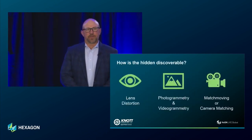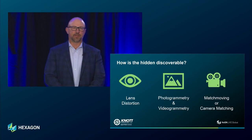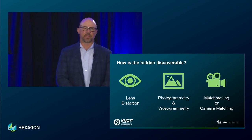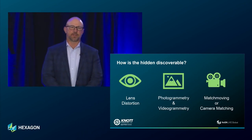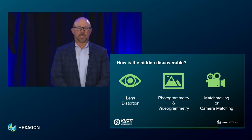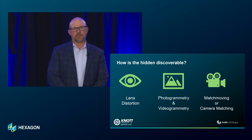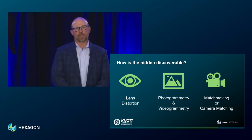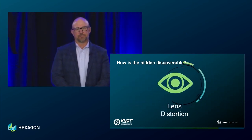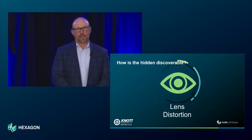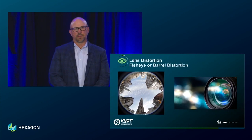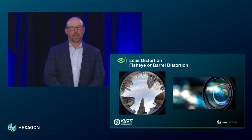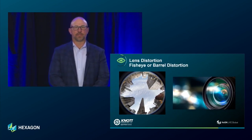As we talk through this hidden information that is now discoverable through this process, there are three things I'm going to cover: lens distortion; photogrammetry and videogrammetry; and match moving, or camera matching.